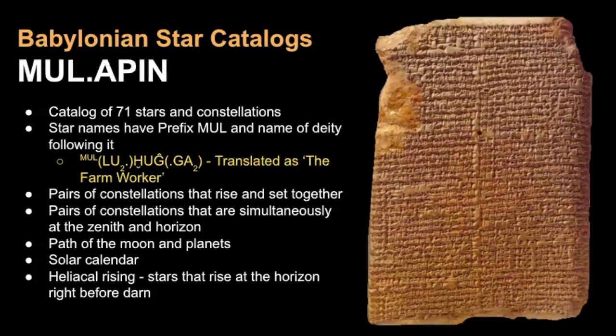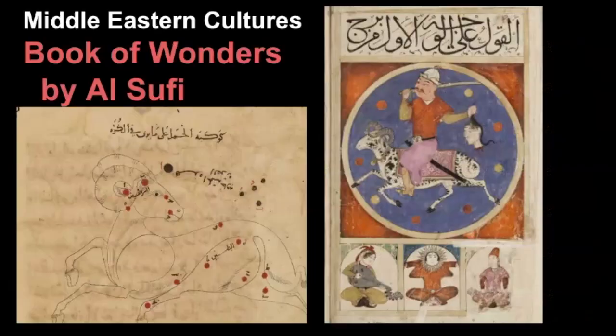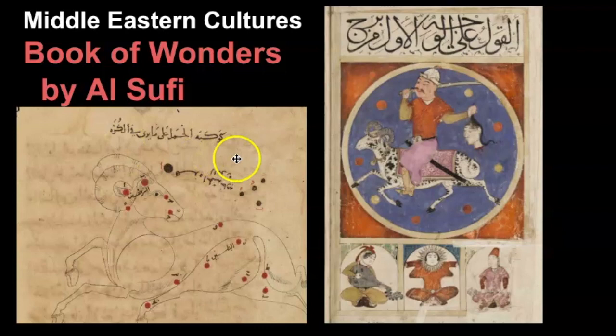The Sumerians, Egyptians, and Greeks all recorded the skies and observed them so they knew when to plant, when to harvest, and so on and so forth. Middle Eastern cultures also acknowledged Aries and it was seen depicted right here in the Book of Wonders that was written by Al Sufi. Now Al Sufi was a Persian astronomer but this book was written in Arabic and it really combined information from Ptolemy's work in the second century along with indigenous Arabic astronomical traditions.